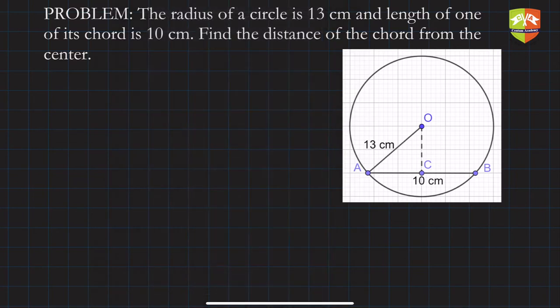As you can see, O is the center here. OA happens to be 13 centimeters, AB is the chord with length 10 centimeters. This is how systematically you should solve the problem. Given is radius of circle with center O equals 13 centimeters.